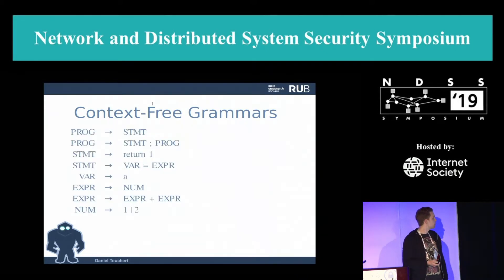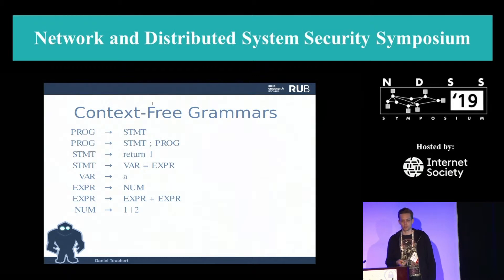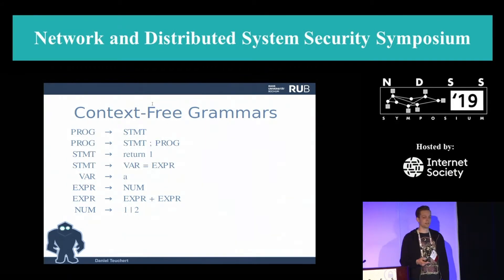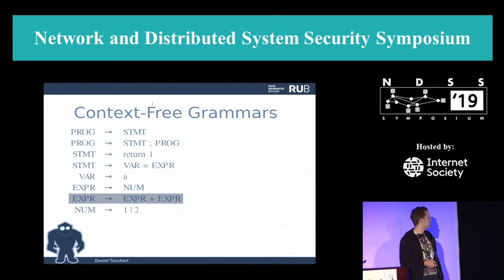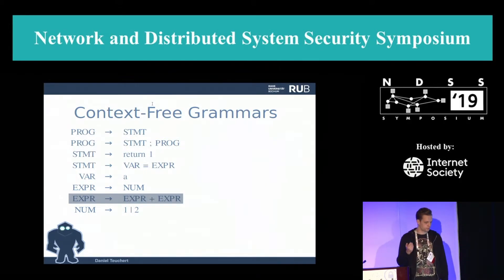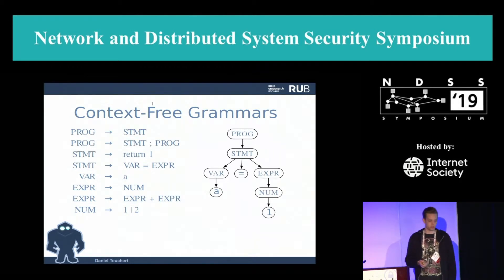As a quick recap: context-free grammars are a set of production rules. The left-hand side consists of a single non-terminal, and the right-hand side consists of any sequence of non-terminals (displayed in all caps) and terminal symbols (displayed in lowercase). For example, a production rule might say an expression can be the sum of any two expressions.